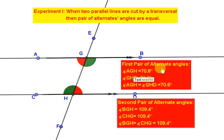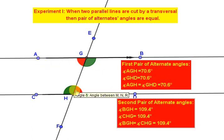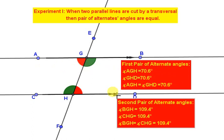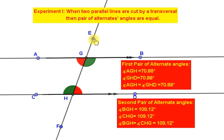You can see the first pair of alternate angles. The measurement of angle AGH, the red angle, is 70.6 degrees. If you see the line E move, the angle changes — for example, to 72.29 degrees — and the alternate angle changes correspondingly.